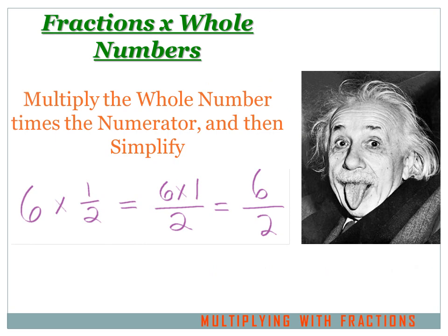Next, we'll look at multiplying a fraction times a whole number, which is pretty simple. All you have to do is multiply the whole number times the numerator of the fraction, and you get your answer. Sometimes that's going to have to be simplified, as it is in this example. 6 times 1 half: I multiply the 6, the whole number, times the 1, the numerator of the fraction, and I got 6 times 1, and my denominator stays the same. So, 6 times 1 equals 6, and the denominator is 2, and my answer is 6 over 2. But that's an improper fraction, and we'll need to simplify it.